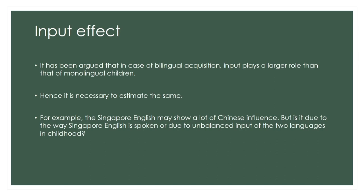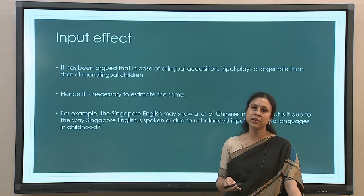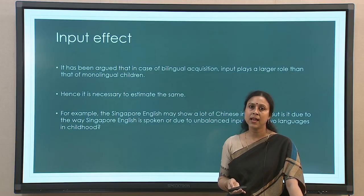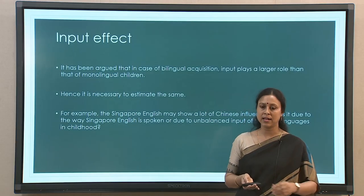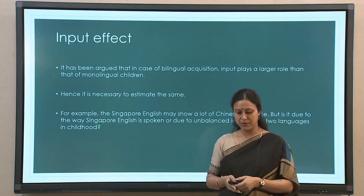This is where we stop with simultaneous bilingualism of children. In the next part we will look at successive bilingualism, and we will see there are some similarities across these categories and some interesting differences as well. Part 2 will deal with successive bilingualism among children as well as adult second language acquisition. Thank you.